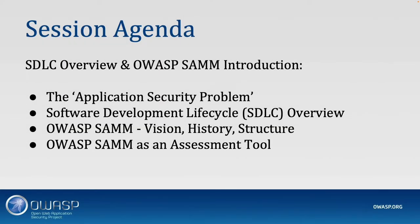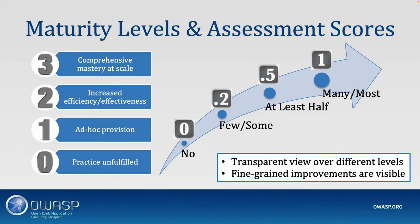Now for the assessment part: there are 90 questions covering all activities. Every question has an answer going from no to many/most, giving you points on a scale from 0 to 1. The maturity levels go from 0 — you don't do anything — to 1, which is very basic and ad hoc, increasing in difficulty up to full mastery.